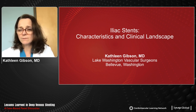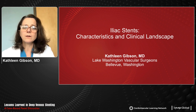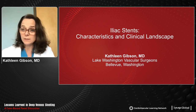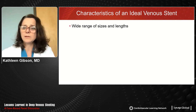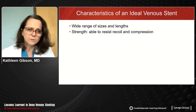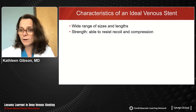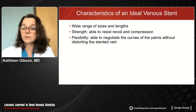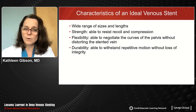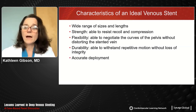I'm going to kick it off with a basic introduction of the current clinical landscape for iliac stenting and some characteristics that differ between available stents. If you were to design a portfolio of the ideal venous stent, it would have a wide range of sizes and lengths to fit different patients' clinical scenarios, be strong enough to resist recoil and compression, flexible enough to negotiate pelvic curves, durable, and accurate in its deployment.